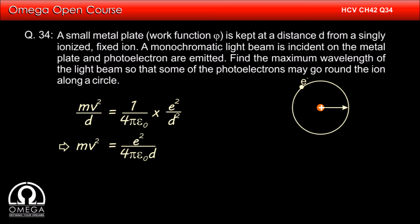Which implies mv square is equal to e square divided by 4 pi epsilon not d, which implies half mv square is equal to e square divided by 8 pi epsilon not d. We know that the maximum kinetic energy that the photoelectron has is the energy of photon minus the work function of the material.